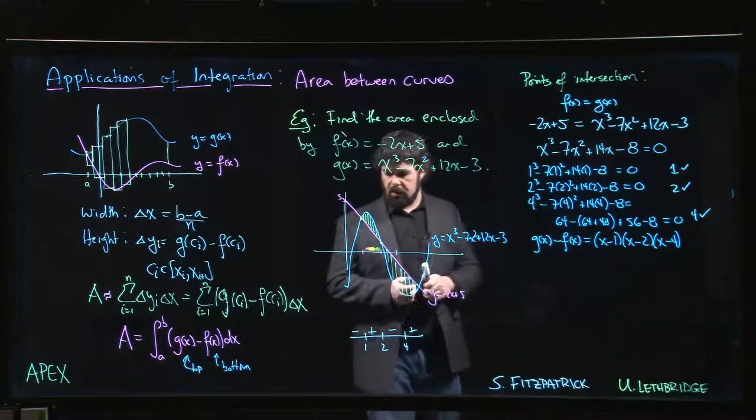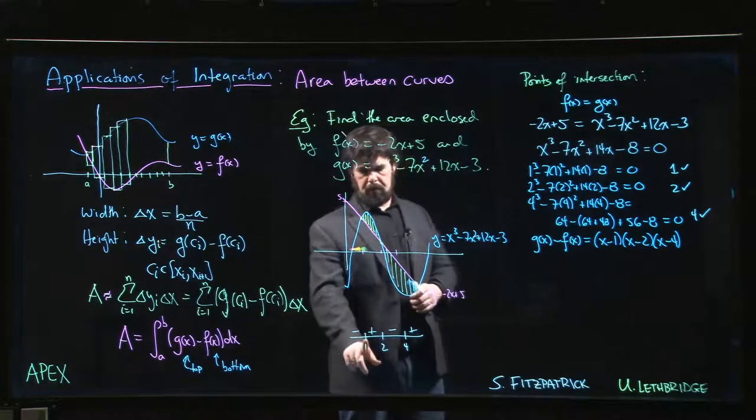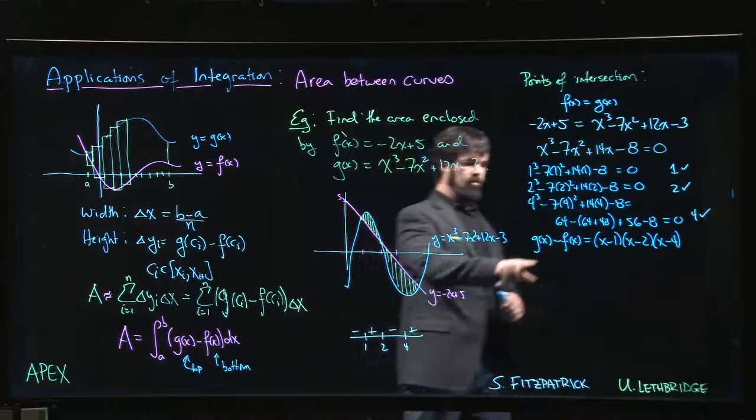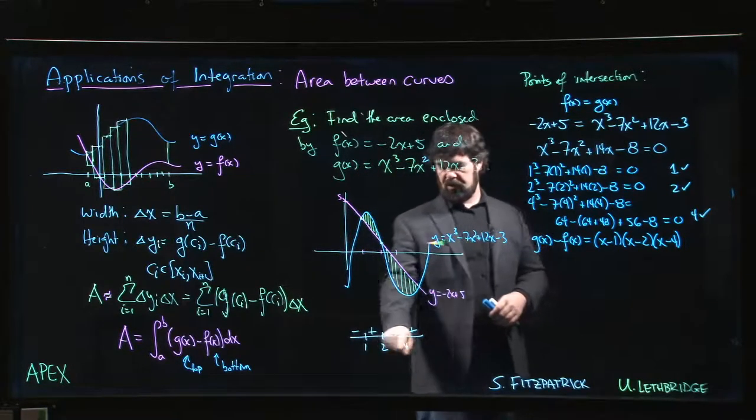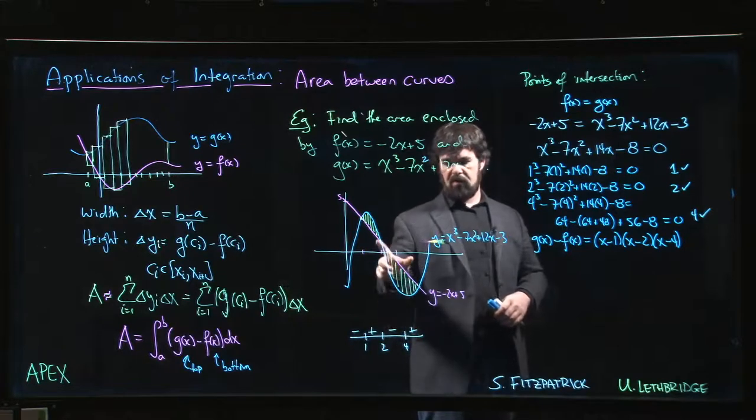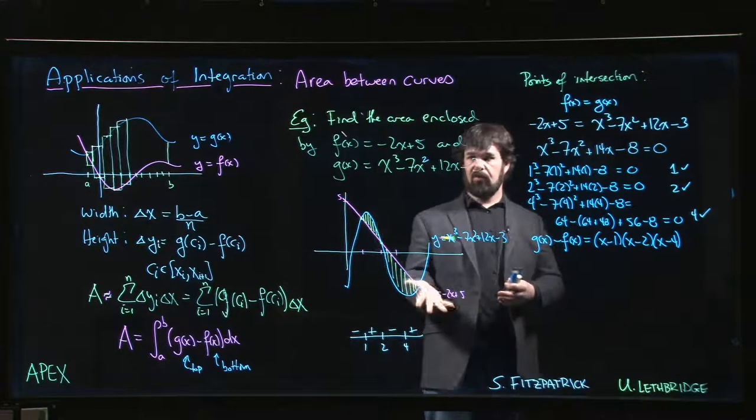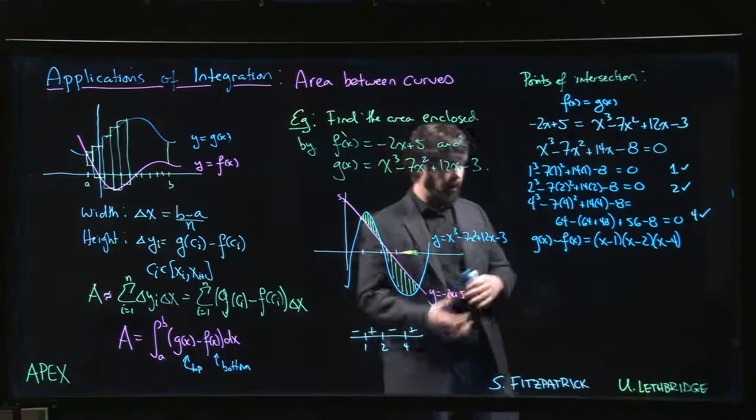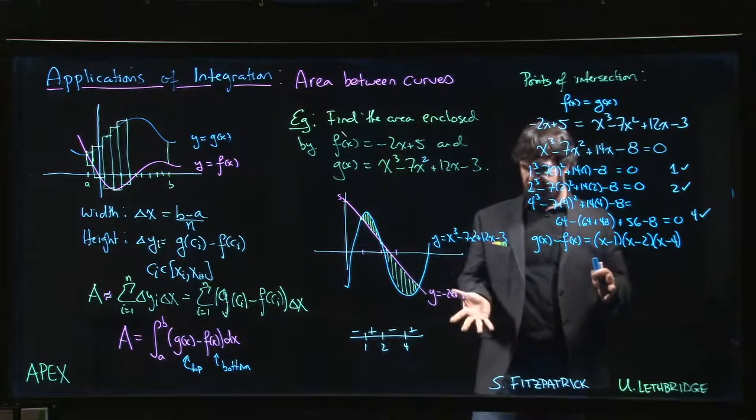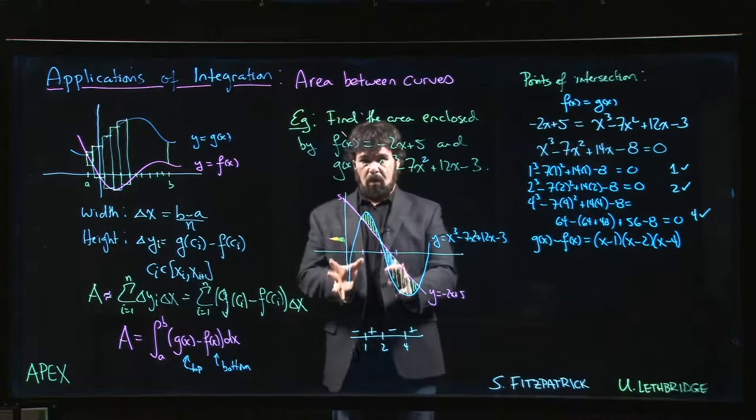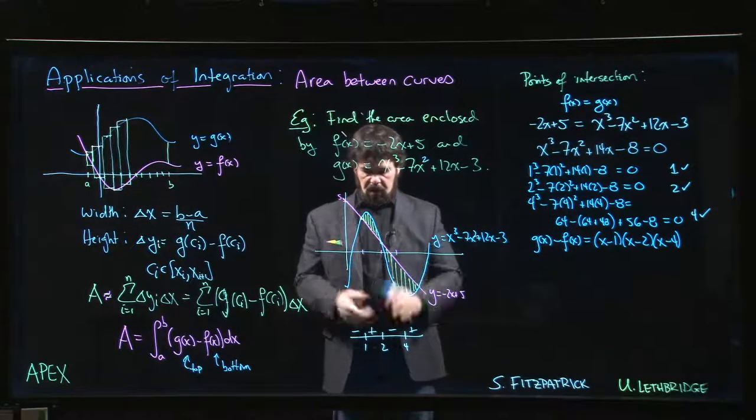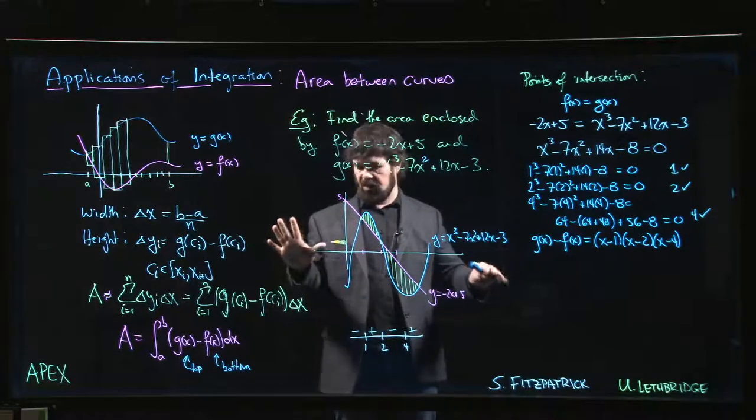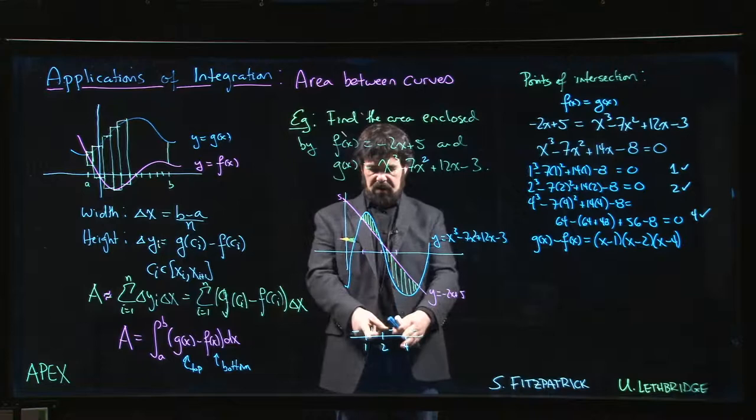So that's telling you that right between 1 and 2, positive meaning g of x is on top. Between 2 and 4, it's negative, so that means that f of x is on top. We can also see it from the graph, but if you didn't have the graph, you can still work it out from the sign diagram. You can do this algebraically if you have to, but it's so much nicer to just have the picture to look at. We don't worry about what's going on outside here because there's no further points of intersection.